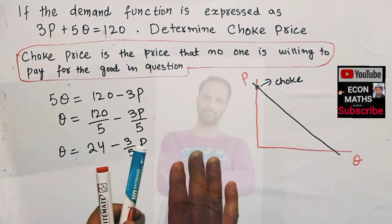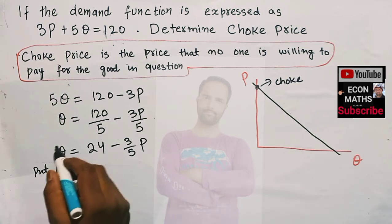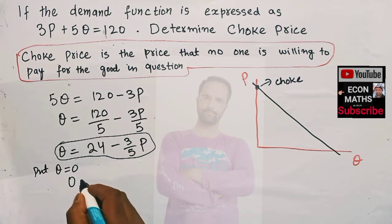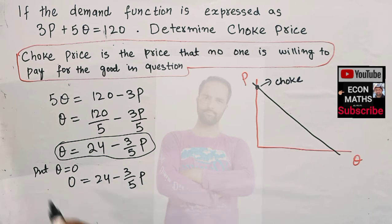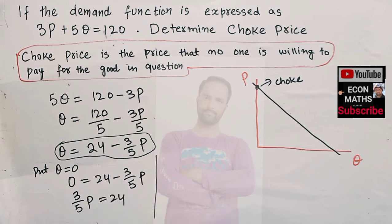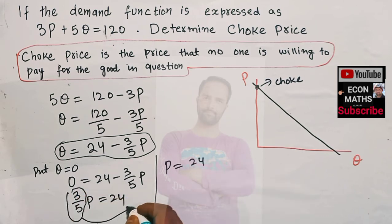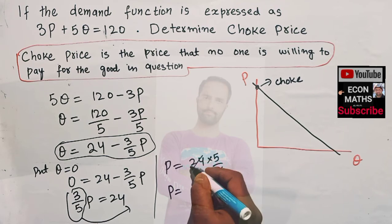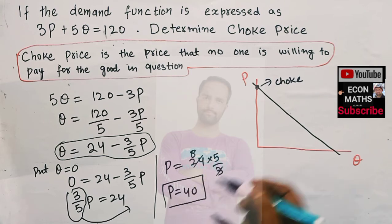The choke price is found by setting quantity demanded equal to zero. Putting Q equals zero in the equation: 0 equals 24 minus 3/5 P. Transposing gives us 3/5 P equals 24, so P equals 24 times 5/3, which equals 40. The choke price in this question is 40.